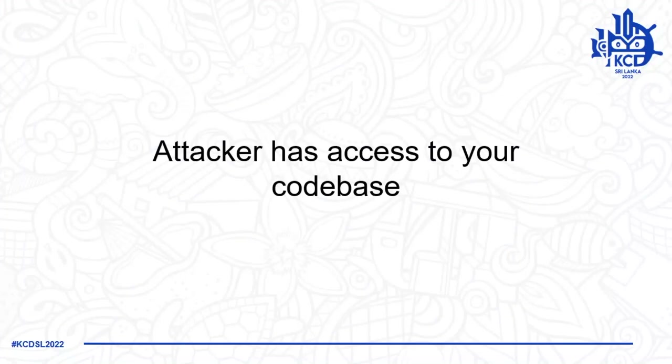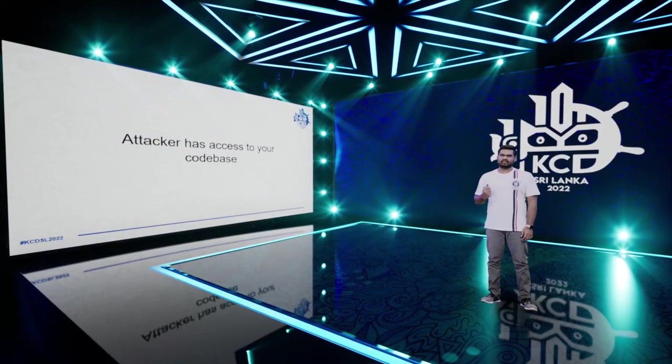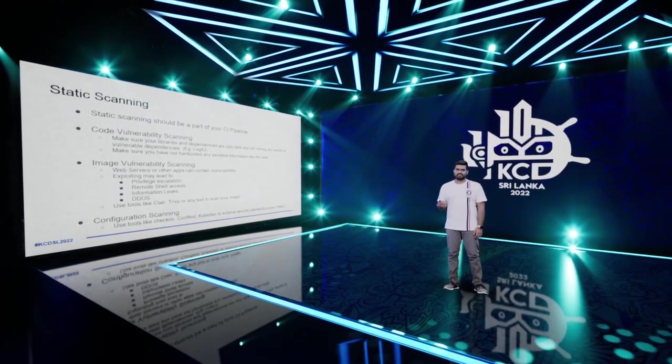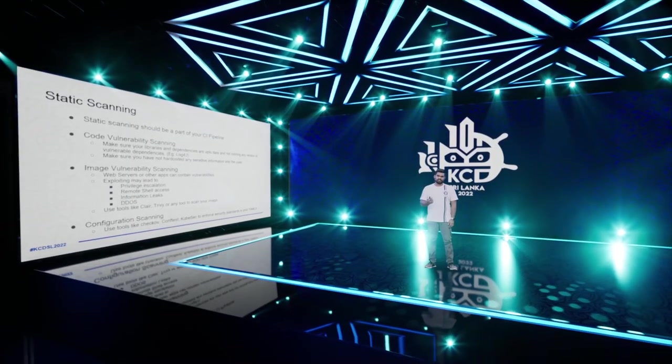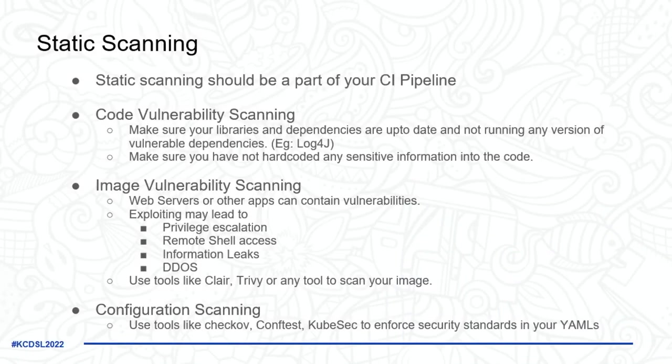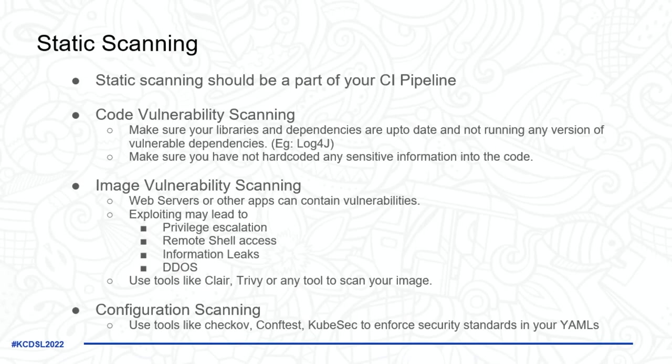The next scenario: the attacker has access to your codebase. They can insert malware, insert vulnerabilities, and exploit them later. To prevent this, do static scanning in your CI pipeline — tools like SonarQube can detect if you're committing sensitive information to git. Do code vulnerability scanning and run it continuously, not just once, since new vulnerabilities are discovered daily.